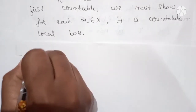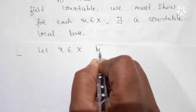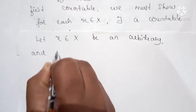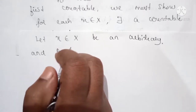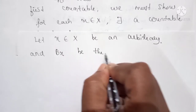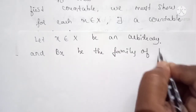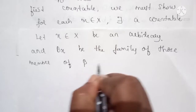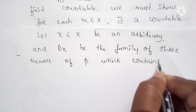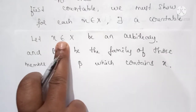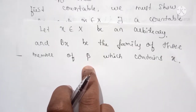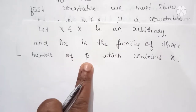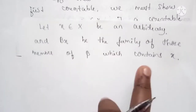Let x belong to X be an arbitrary element. Let B_x be the family of those members of beta which contain x. So B_x is a collection of all those members of beta which contain x — it is a collection of all subsets of X which contain x.